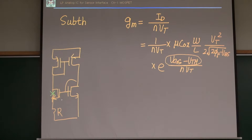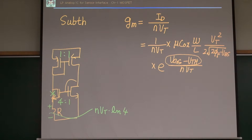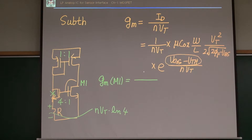If the W/L relation is 4:1, we find the voltage drop across the resistor is m·Vt·log(4). Now, what is the gm of this M1 transistor? The gm of M1 is Id divided by m·Vt.